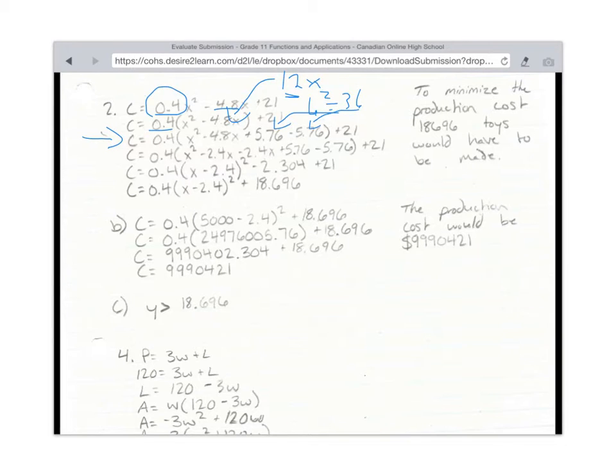So when everything comes out, you should have x squared minus 12x plus 36 minus 36. And that's all that should be there. So it should look like this: 0.4 times x squared minus 12x plus 36 minus 36 plus 21.